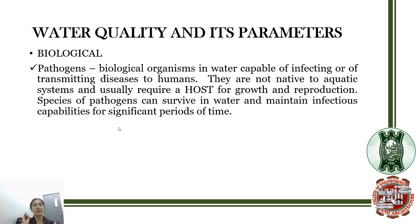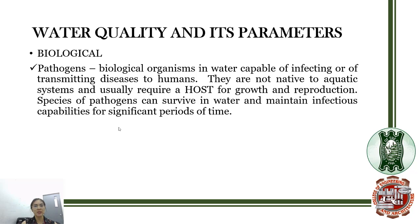Now let's go to biological water quality. The main contributing factor is pathogens. Pathogens are biological organisms in water that are capable of infecting or transmitting diseases to humans. They are not native to aquatic systems and usually require a host for growth and reproduction. Species of pathogens can survive in water and maintain infectious capabilities for significant periods of time.